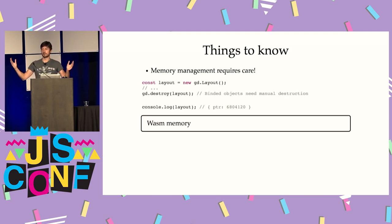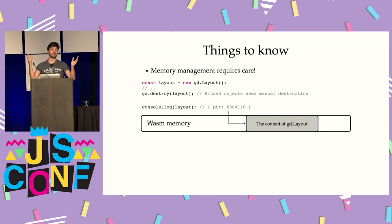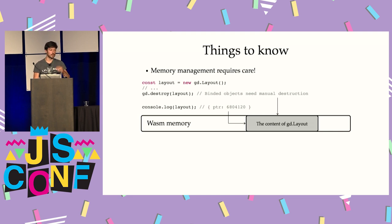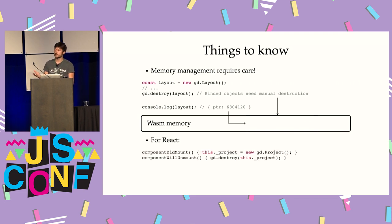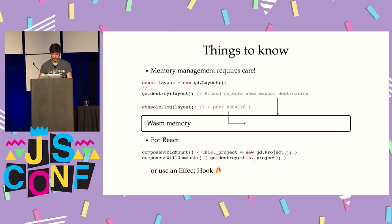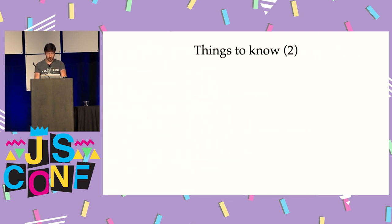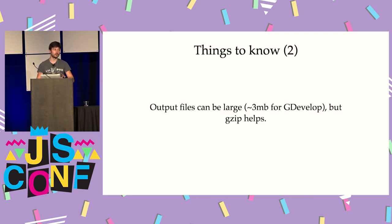You can think of the WebAssembly memory as a huge array of bytes. When you create a new object it's really creating bytes in this memory, meaning that if you just drop the reference to the object in the JavaScript world, the WebAssembly object will still be living in memory. So you have to explicitly call the destroy method to remove it from memory. In the case of using React or any component-based frontend framework, if you're creating an object when the component is mounted, you have to remember to delete it — or you can use an effect hook in React.